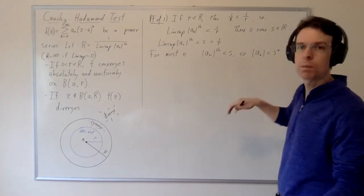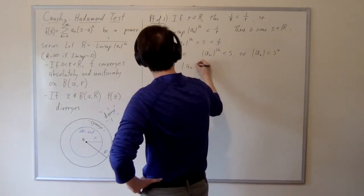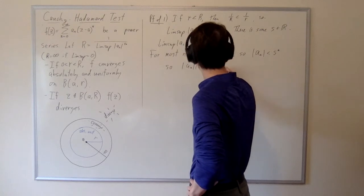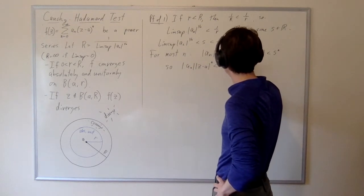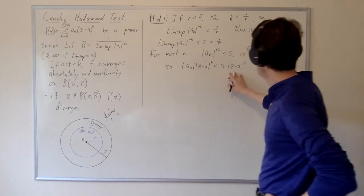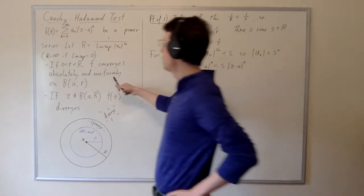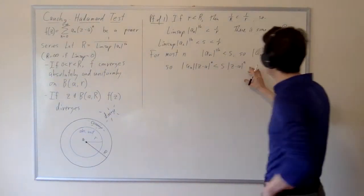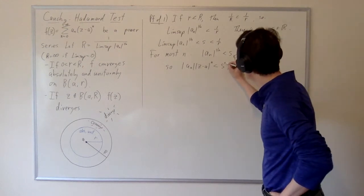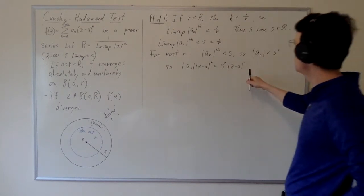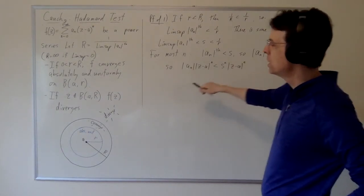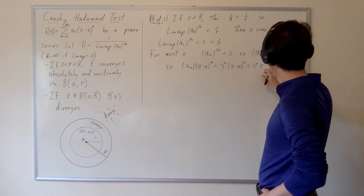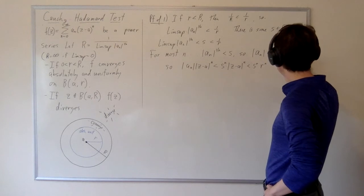Let's multiply both sides by the modulus of (z minus a)^n. So we're going to have |a_n| times |z minus a|^n less than s^n times |z minus a|^n. Now if z comes from the ball of radius r, then |z minus a| can be no more than r. So we get s^n · r^n if z is in that ball.